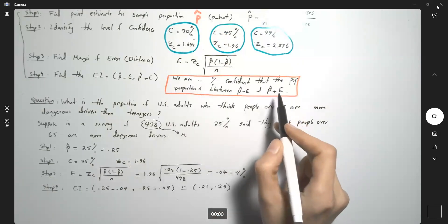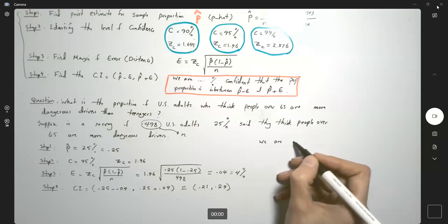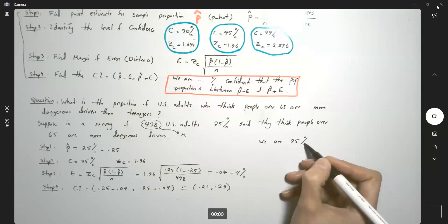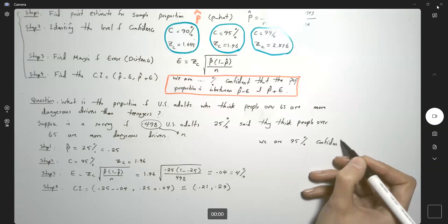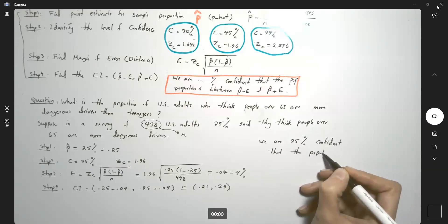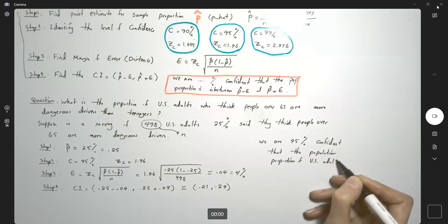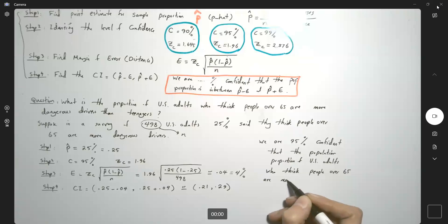We need to use a couple of sentences. We are 95 percent confident that the population proportion of U.S. adults who think people over 65 are more dangerous